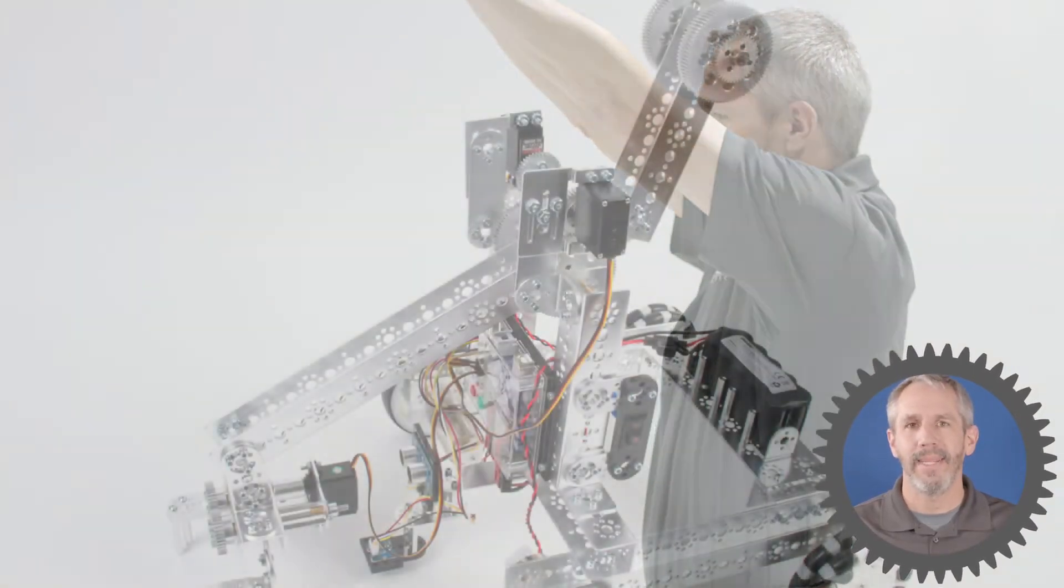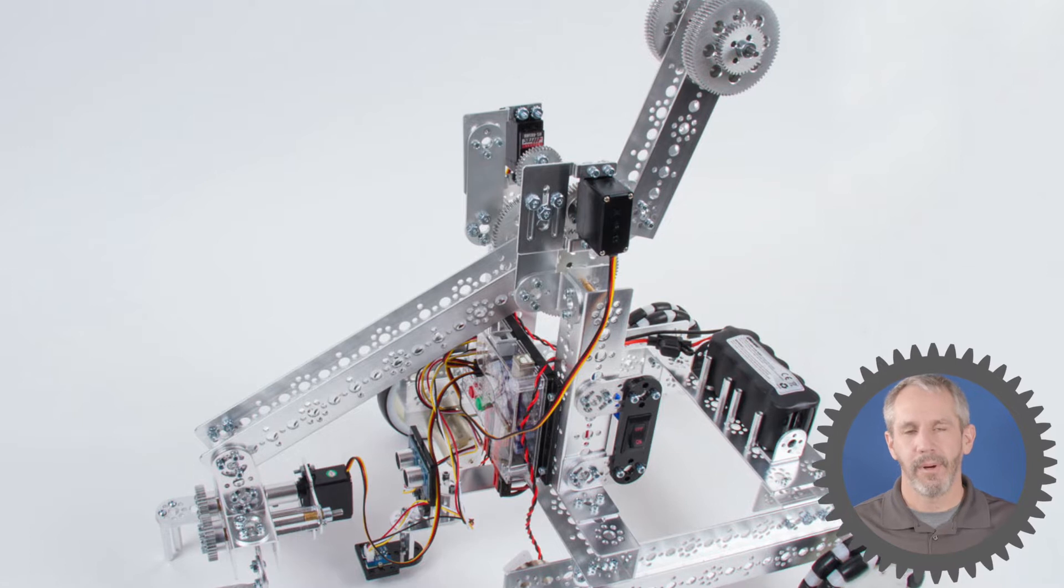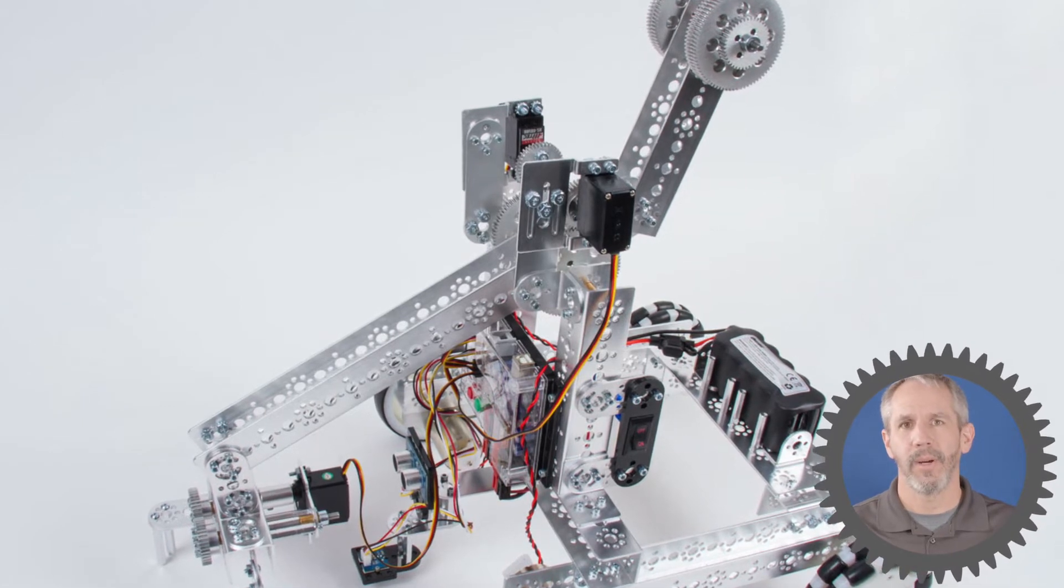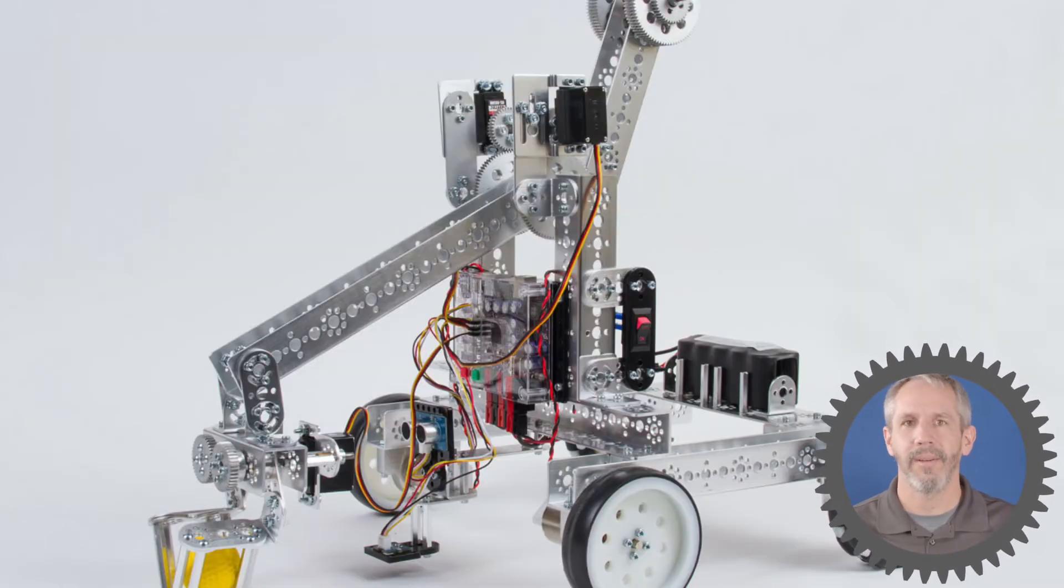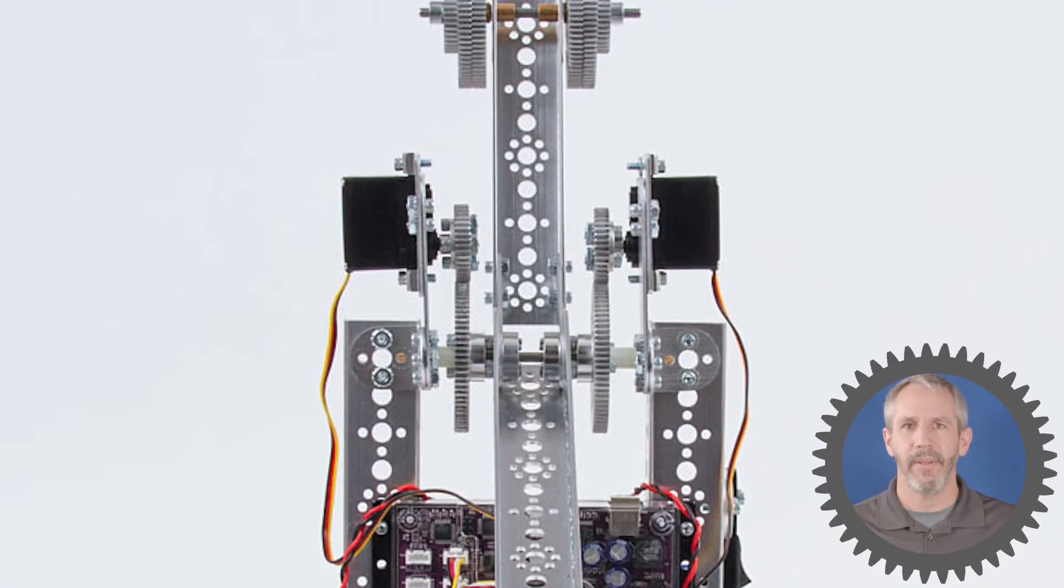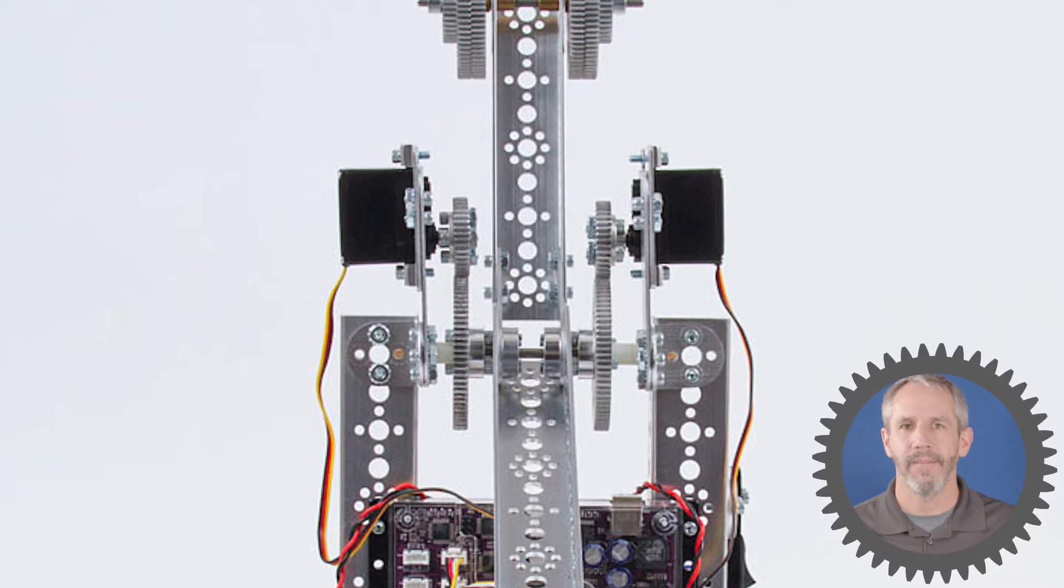There are a couple of ways to increase the torque on your lever arm. This robot has two servos that are working in unison together, doubling the amount of torque on the lever arm. It also uses a two to one gear train that amplifies the amount of torque, allowing us to lift more weight.